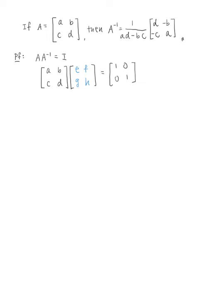We also just learned how to multiply two matrices — you take the first row and dot it with the first column, then dot it with the second column, and so forth. So what we get is: AE + BG = 1, AF + BH = 0, CE + DG = 0, and CF + DH = 1.